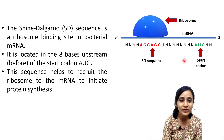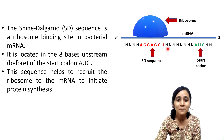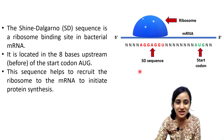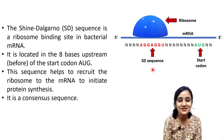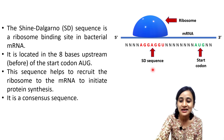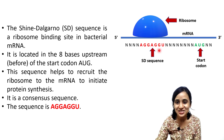This sequence helps to recruit the ribosome to the mRNA to initiate protein synthesis. The SD sequence is a consensus sequence, meaning it is constant, and this consensus sequence is AGGAGGU — a seven nucleotide sequence.